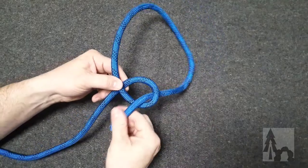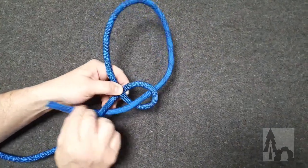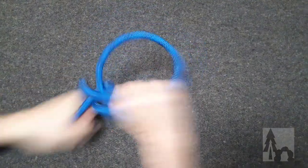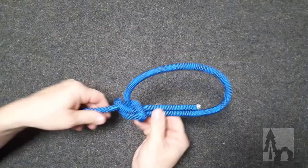Goes behind the standing end, or in this case under the standing end, around the tree, back in the hole. I grab the rabbit, I pull the standing end tight, and now I've got my bowline loop.